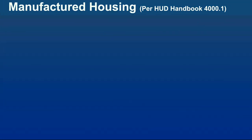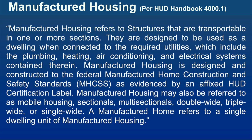HUD handbook 4000.1 provides the following definition for manufactured housing: manufactured housing refers to structures that are transportable in one or more sections, designed to be used as a dwelling when connected to the required utilities — which include the plumbing, heating, air conditioning, and electrical systems. Manufactured housing is designed and constructed to the federal manufactured home construction and safety standards, as evidenced by an affixed HUD certification label. Manufactured housing may also be referred to as mobile housing, sectionals, multi-sectionals, double wide, triple wide, or single wide.